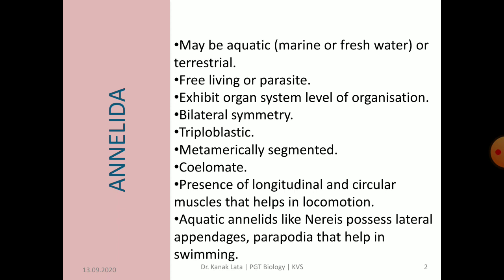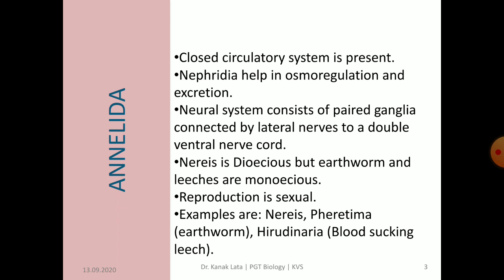A closed circulatory system has appeared. Some blood vessels are elongated to act as pumping hearts. The blood is red with hemoglobin dissolved in plasma. The excretion and osmoregulation is done with the help of nephridia. The excretory organ is nephridia. The nervous system consists of paired ganglia connected by lateral nerves to a double ventral nerve cord.